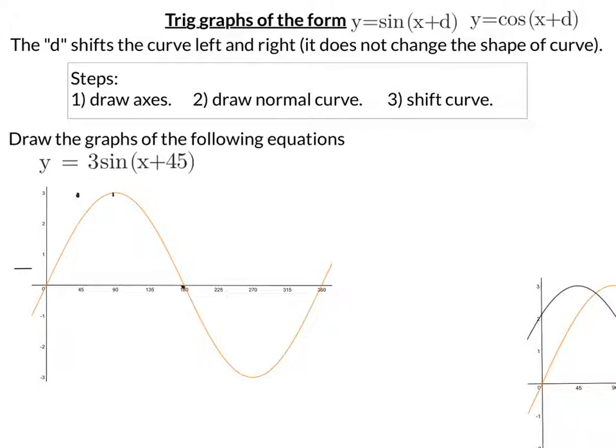While it was at 180, where it crosses the x-axis, now 135. Minimum at 270. Well, that's now 225. X-intercept at 360 is now 315.